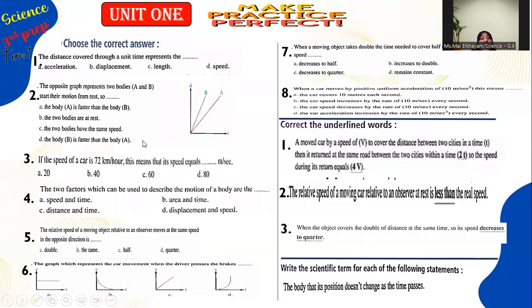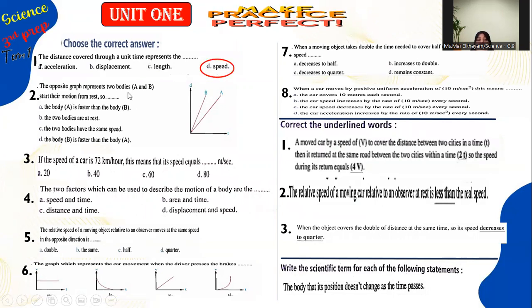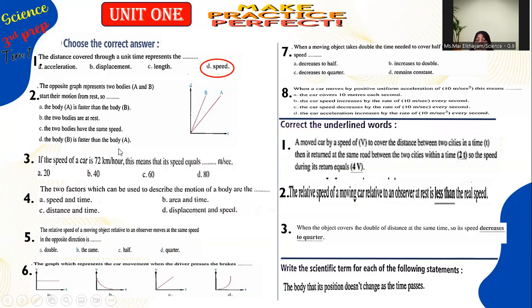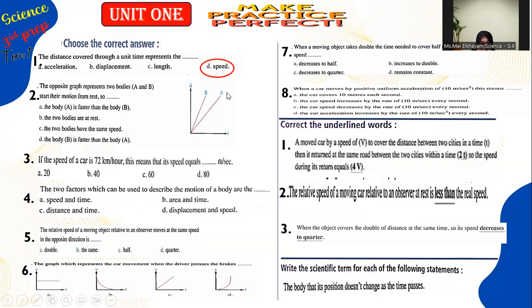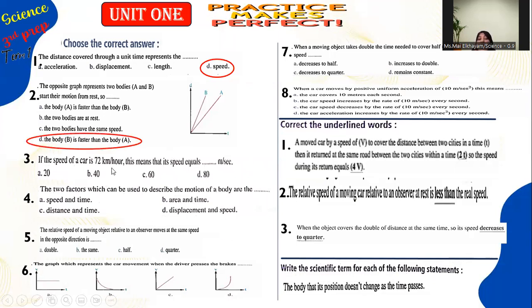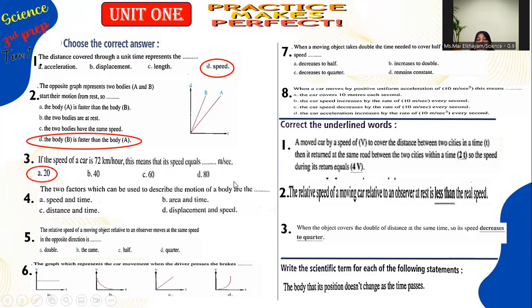Practice questions: The distance covered through unit time represents speed. On a distance-time graph with bodies A and B, if B covered the same distance in less time than A, then body B is faster than body A. If car speed is 72 km/h, multiplying by 5/18 gives 20 m/s. The two factors to describe motion are distance and time.